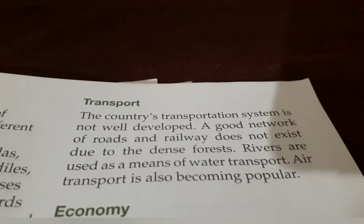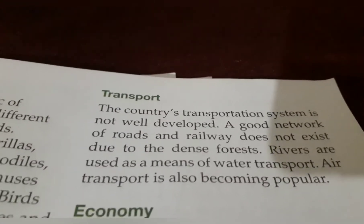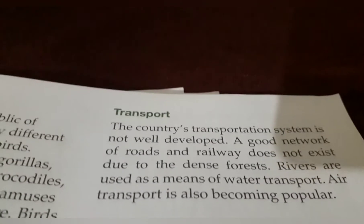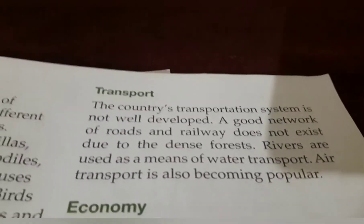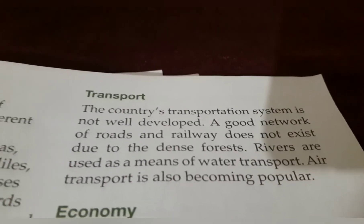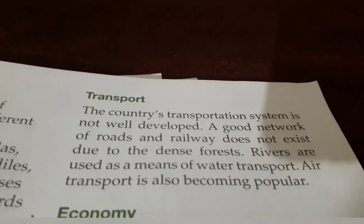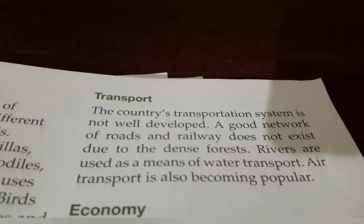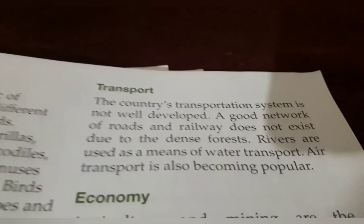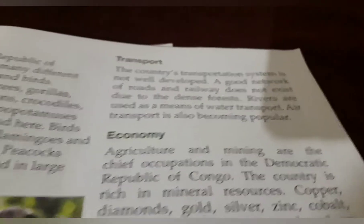So how do people travel? Rivers are used as a means of water transport. People travel by boat and ship from one place to another. The other popular transportation system in DRC is air transport. Building roads and railways in the middle of forests is not easy, so land transport is not good. Water transport and air transport are very popular in the Democratic Republic of Congo.